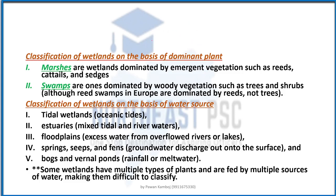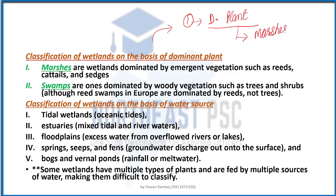Wetlands can also be classified. The first classification is on the basis of the dominant plant. For example, marshes are a type of wetland. Depending on which plant is dominant — whether weeds, trees, or shrubs — the wetland type differs.